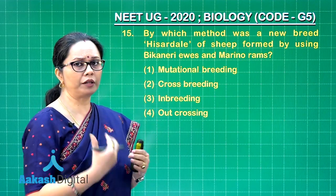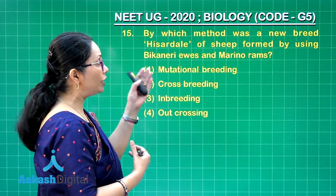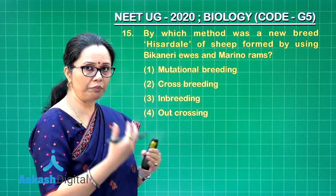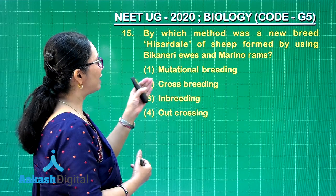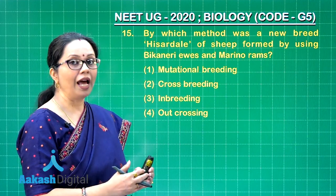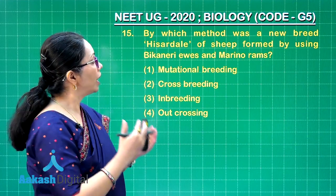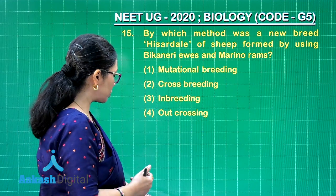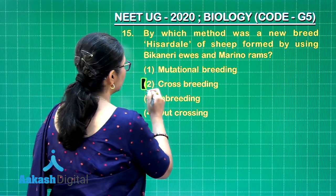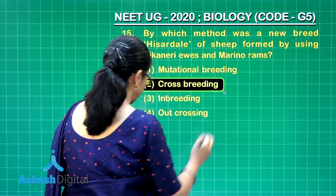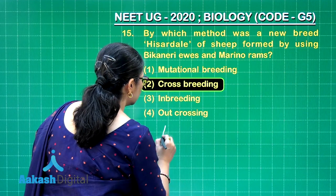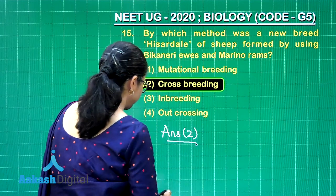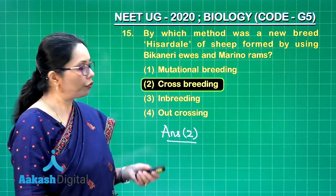When two different breeds — the ewe (female sheep) and the ram (male sheep) — are mated, this is certainly a case of cross breeding. This is done in animal husbandry to increase productivity. Therefore the answer for Q15 is cross breeding, making option 2 the correct answer.